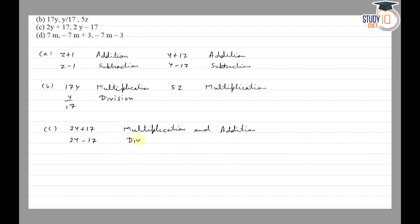So for 2y minus 17, the operations are multiplication and subtraction.